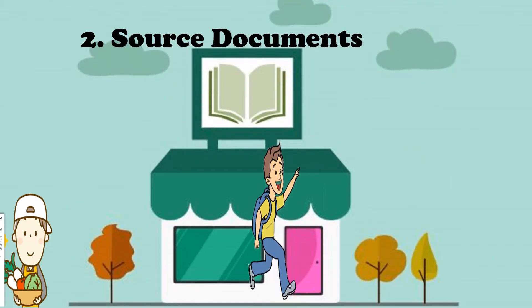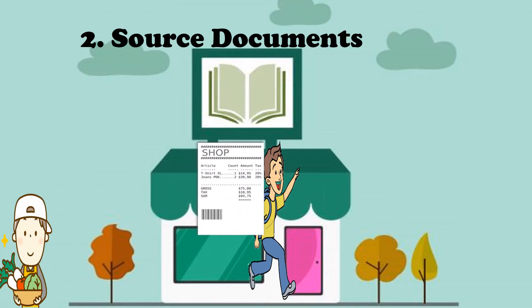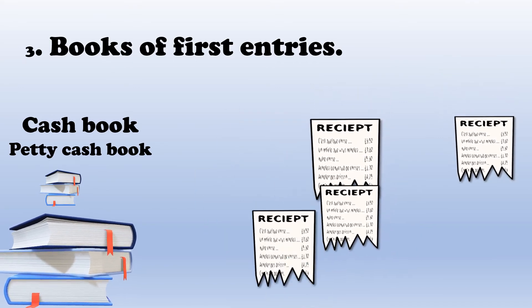The next thing on the accounting cycle is source document. A source document is proof that the transaction took place, which means if you buy or sell something, you need to give a certain paper that indicates that yes, indeed, a transaction happened. In this case, our customer would receive a source document.